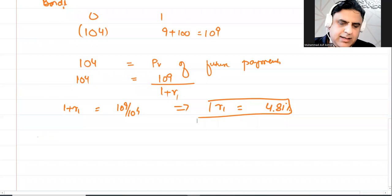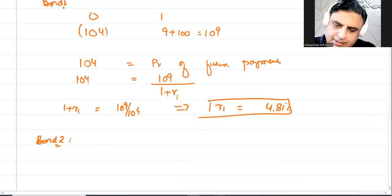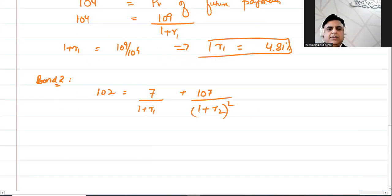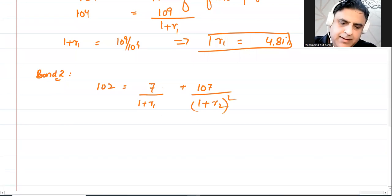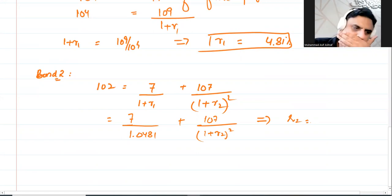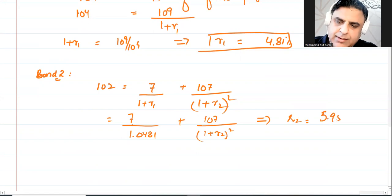Similarly, for Bond 2: invest 102 in year zero. Coupon rate is seven percent, so year one cash flow is 7 and year two is 107. Year one discounted at (1 + r1 = 1.0481), year two discounted at (1 + r2)². Solving the equation gives r2 = 5.95 percent.